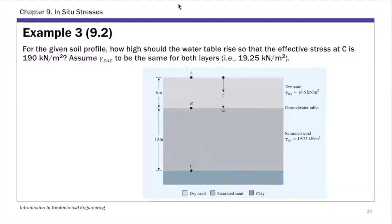For this example three, you have the soil profile and this time it asks about the change in water table so that effective stress at point C is at a particular value. Here we're going to use dry sand gamma dry above the water table instead of moist.